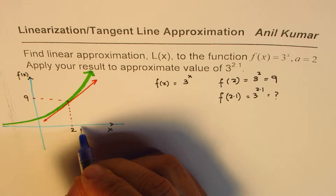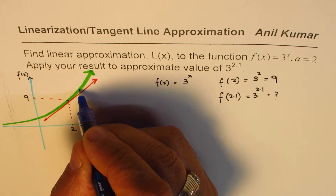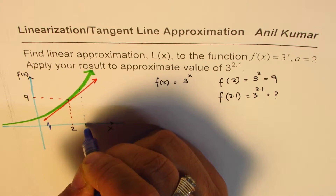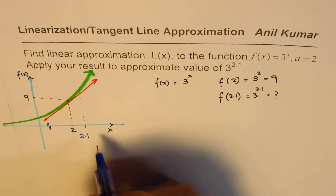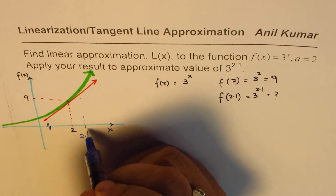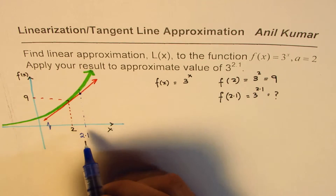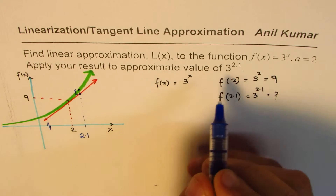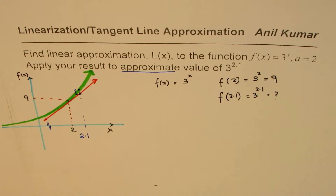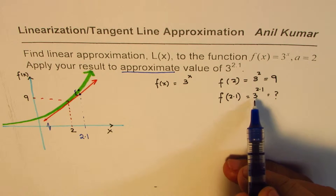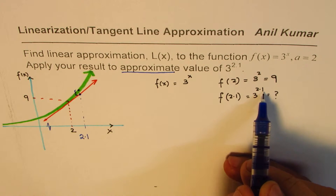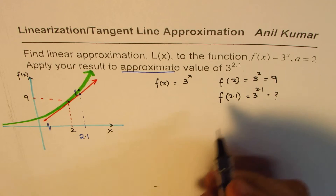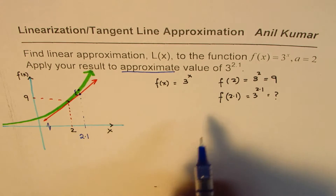The concept is that function calculations could at times be very difficult, but calculating a point on the line is much simpler. So I'll take x = 2.1 — it should be very close but I'll take it slightly further away to illustrate. Let's say 2.1 is here. If I find a point on the line, the value will be slightly lower than the actual function value — you can see there is a difference, and that is the error. That's what we mean by calculating an approximate value.